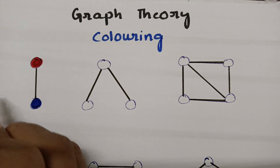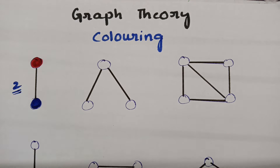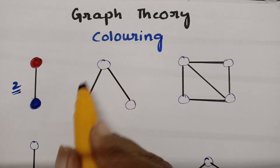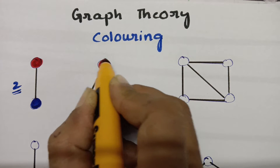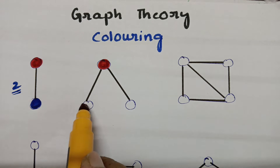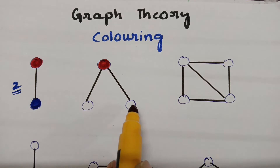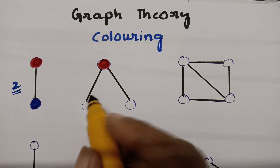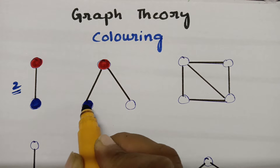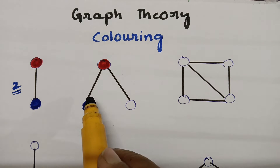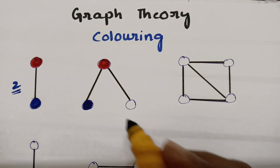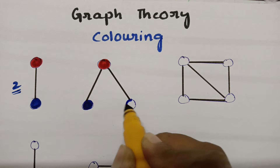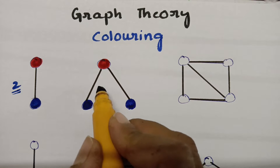The chromatic number of this first graph is two, as we used two colors. For the next graph, I'm using red color here; the adjacent vertices shouldn't be red. This vertex is also adjacent, so I use another color. This third vertex can reuse the first color since it is not adjacent, so the chromatic number of this graph is two.